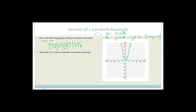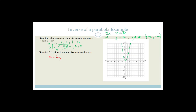Now it says find the inverse of this function and state its domain and range. We swap x and y and solve for y. So if we do that, we've got x equals 2y squared. Therefore x over 2 equals y squared. Therefore the square root of x over 2 equals y. And remember, this is plus or minus. Now we need to substitute values in.